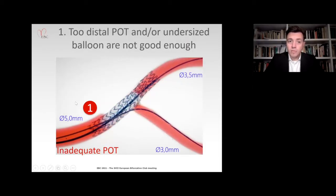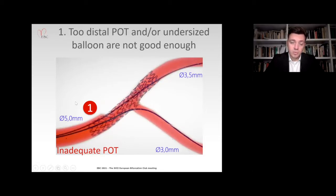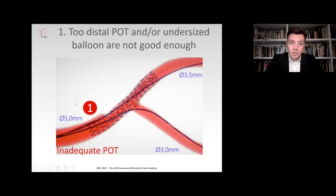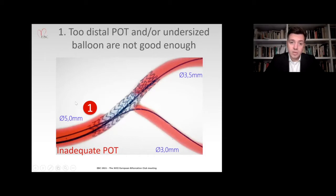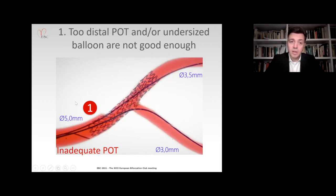To avoid or circumvent this, you can perform POT and all is good. However, POT being a technique needs to be performed correctly. If you perform it too distally, as you can see on this example, or with an undersized balloon, it leaves you at the proximal edge of the stent with the very same result as not performing POT at all. The wire still can go behind the struts, and you can still have abluminal rewiring, even though you think that you have performed POT. It was not performed correctly, and it leaves the proximal part of the stent still not expanded well with a large area of malapposition.